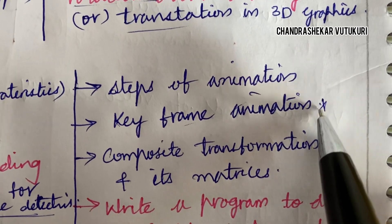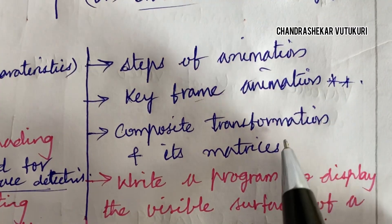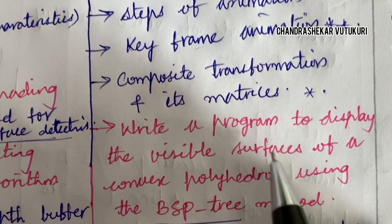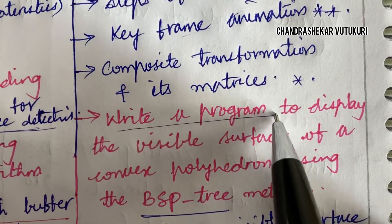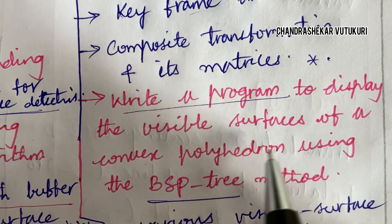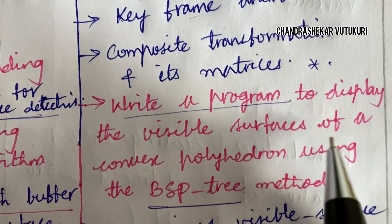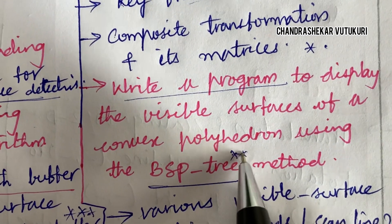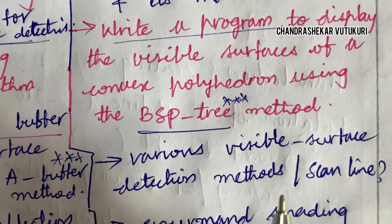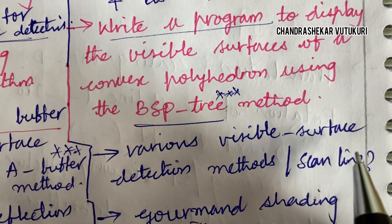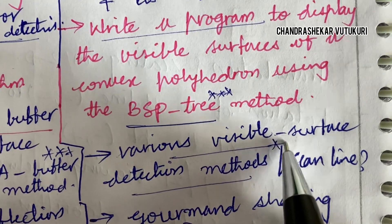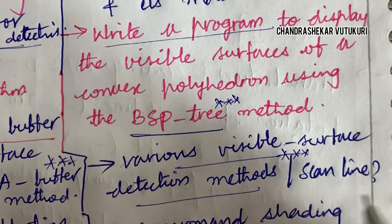Keyframe animation is said to be a topmost question, as well as composite transformation and its matrices. Sometimes a program is also asked, like to display the visible surfaces of a convex polyhedron using BSP trees. They may also ask you to define the term BSP trees in a short question. Various visible surface detection methods is also said to be a very important question — that is a 5-mark question.